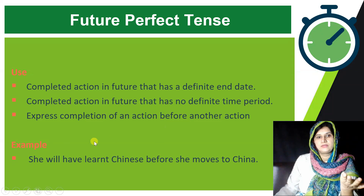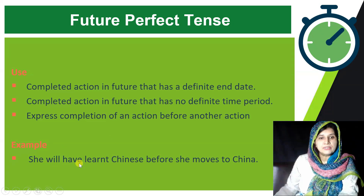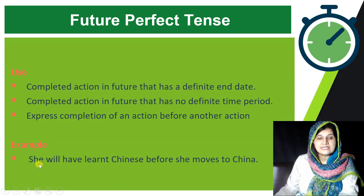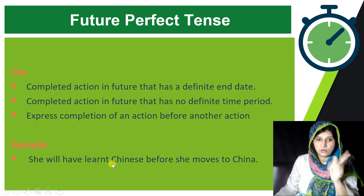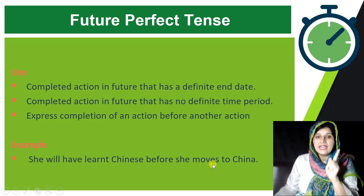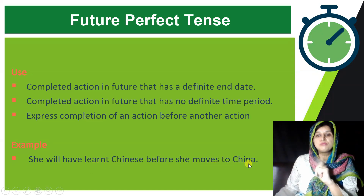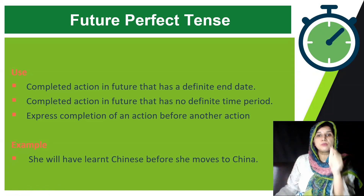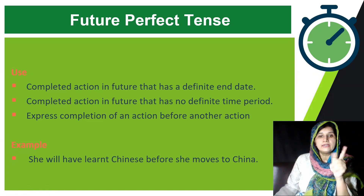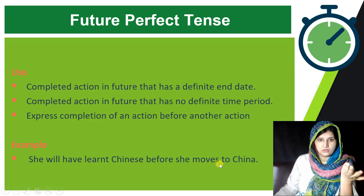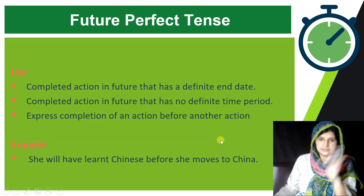Future Perfect Tense is also used to express the completion of one action before another action. For example: 'She will have learned Chinese before she moves to China.' This means the first action — learning Chinese — happens before the second action — moving to China. This is how Future Perfect expresses sequence of future actions.